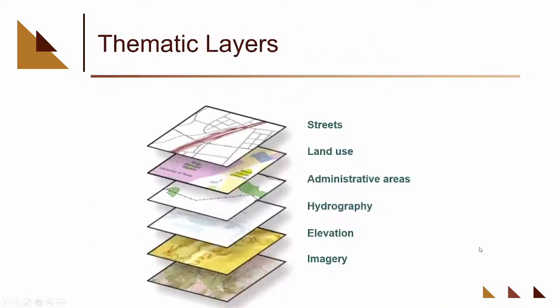We also organize everything as thematic layers. A thematic layer is data of like type that we make a collection of. Streets could be one layer, land use could be another, administrative boundaries another, and many more. Your thematic layers are created by you and you can call them what you want.